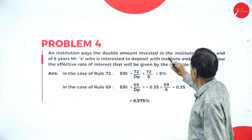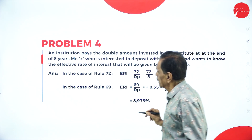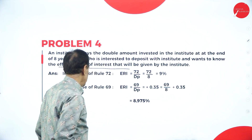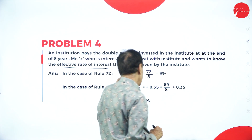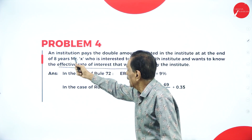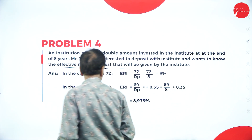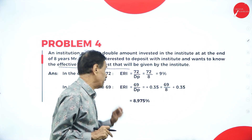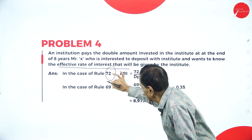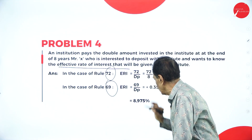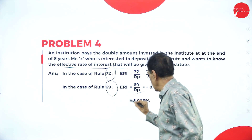An institution pays double the amount invested at the end of 8 years. Mr. X wants to know the effective rate of interest. Using Rule of 72: 72 divided by number of years = effective rate of interest; 72 ÷ 8 = 9%. Using Rule of 69: effective rate = 0.35 + (69 ÷ number of years); 0.35 + (69 ÷ 8) = 0.35 + 8.625 = 8.975%.